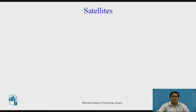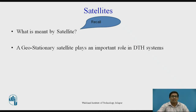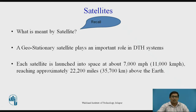The first component is satellites. A satellite transmits as well as receives signals from or to the earth station. In DTH, we mainly use a geostationary satellite, which plays an important role in the DTH system. Each satellite is launched into space at about 7,000 miles per hour (11,000 kilometers per hour), reaching approximately 22,200 miles (35,700 kilometers) above the earth. This is the location of the geostationary satellite used for the DTH system.